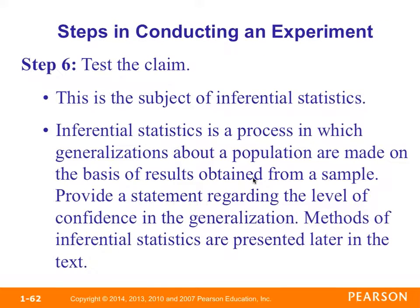Step six is to test the claim — this is the subject of inferential statistics. Inferential statistics is the process of making generalizations about a population based on results obtained from a sample. We provide a statement regarding the level of confidence in the generalization. For example, we might say we are a certain percentage confident that the true population results would be between X and Y. The sample is never going to be perfect, but we can use it to obtain a level of confidence and make generalizations about our population.